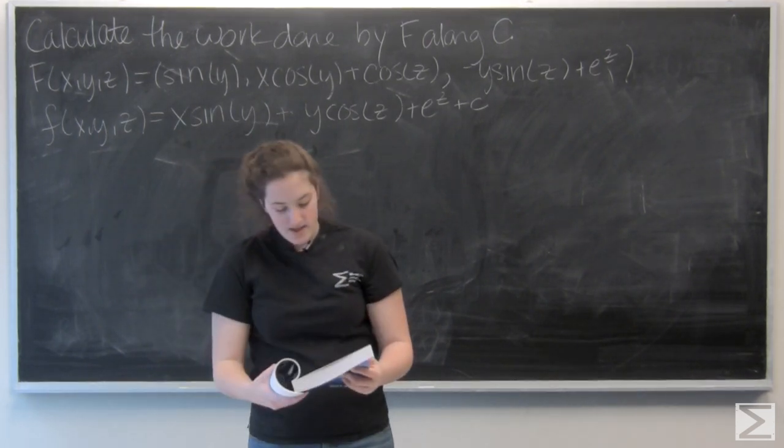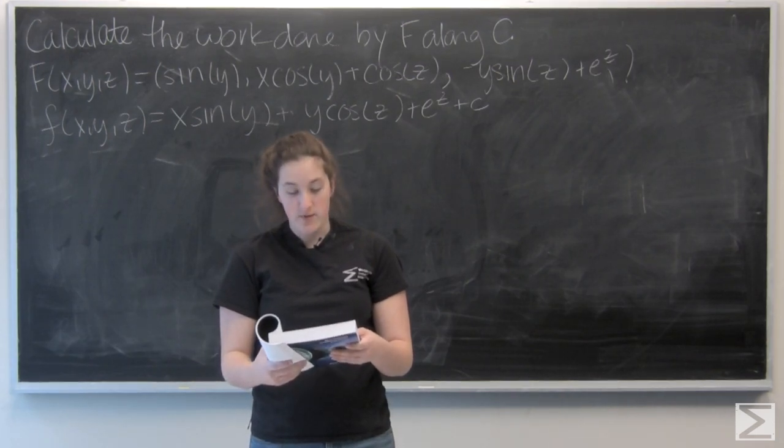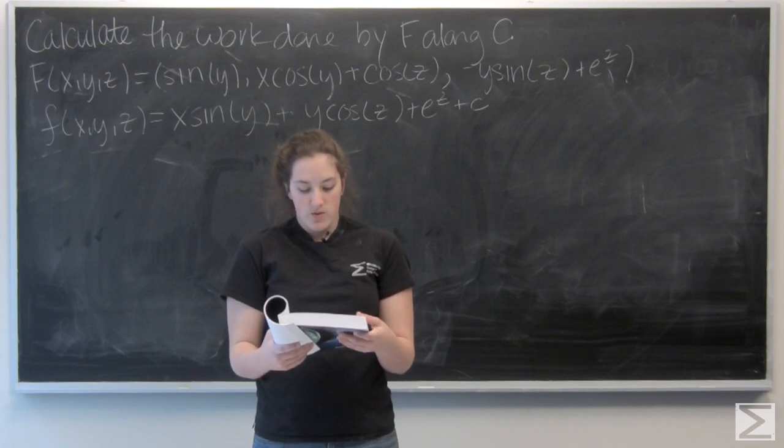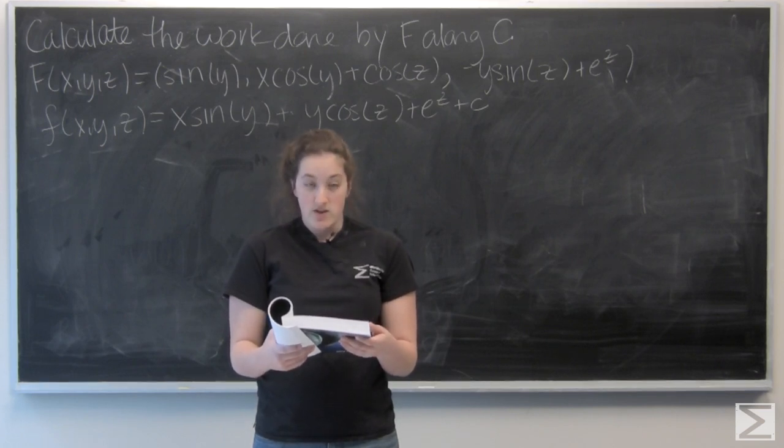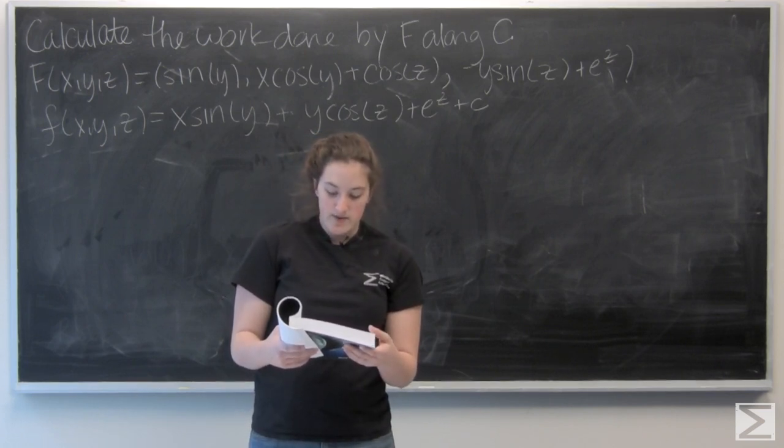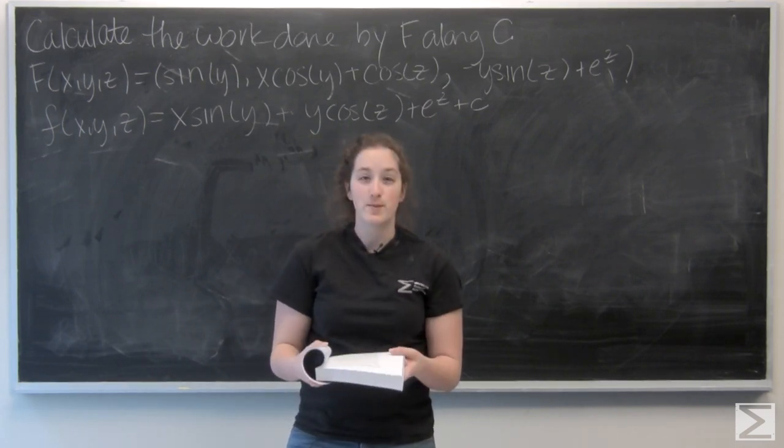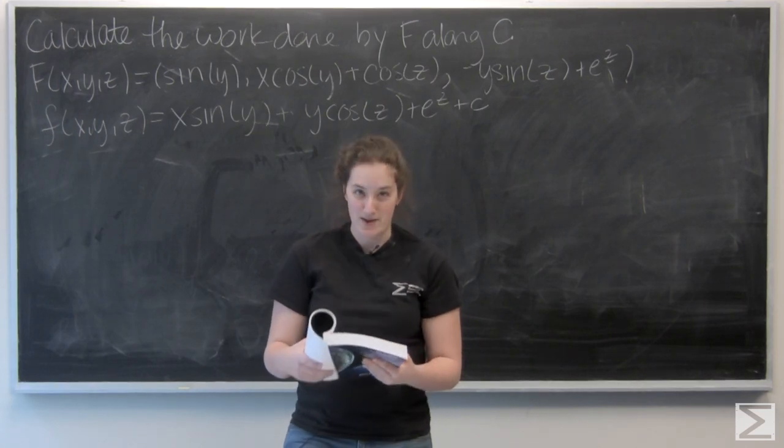So, c is the oriented curve that consists of the line segment from 000 to 300, followed by the quarter circle of radius 3 centered at the origin in the xz plane from 300 to 003, followed by the line segment from 003 to pi pi pi.